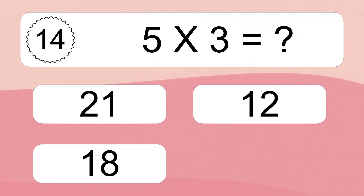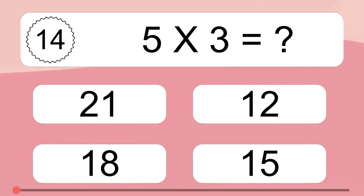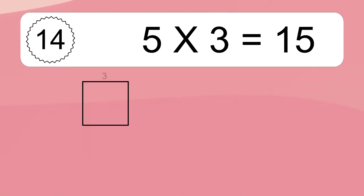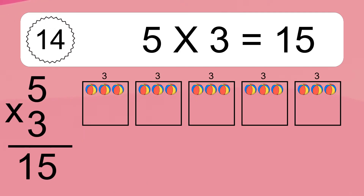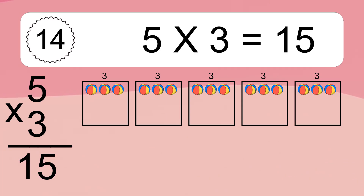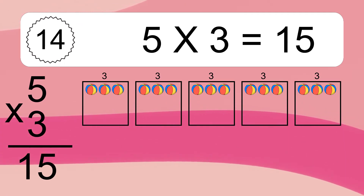5 times 3 equals what? 5 times 3 equals 15. We have 5 boxes, and each box has 3 colorful balls inside. If you count all the balls in all the boxes together, you will have 5 times 3 balls. This equals 15 balls.